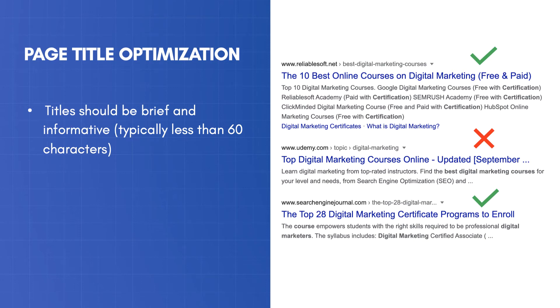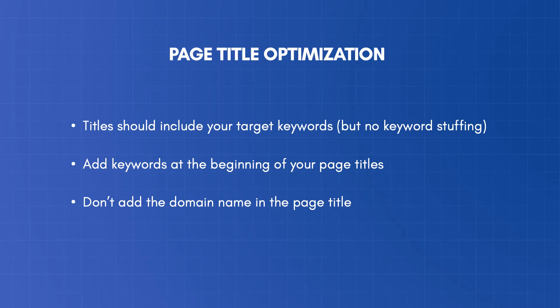Let's see how to optimize your titles for SEO. Titles should include your target keywords. This is extremely important for SEO, and it's not against any Google guidelines. On the contrary, it's a good SEO practice. Having keywords in the title helps search engines associate your page with relevant search queries, and increases your chances of ranking for those keywords.